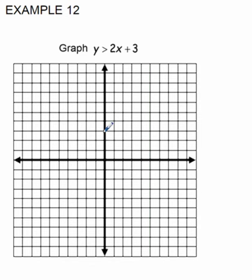So 1, 2, 3. And our slope here is 2, or 2 over 1. So I'm going to go up 2 over 1, all the way across my graph.